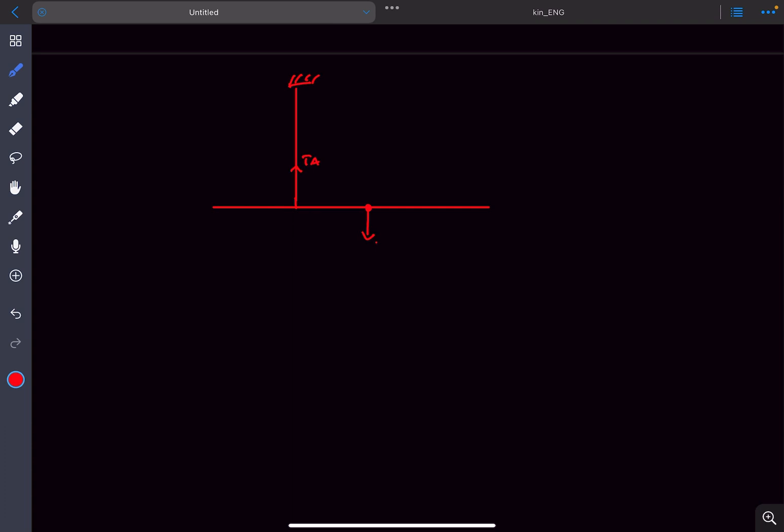The center of mass is at a distance of L by 4. Initially let's assume there was no contact between them. If I write the torque equation about this point O, then we can say Mg multiplied by L by 4 equals I about O times alpha.